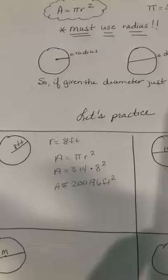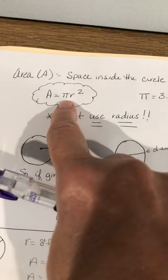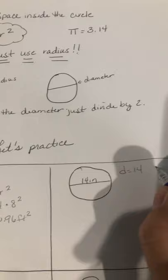All right, so let's look at this one. This is the diameter. The diameter is 14. But if you recall, when we go back up here to our formula, we cannot use diameter. So we have to remember to divide by 2. So the radius is what? What's 14 divided by 2? 7.